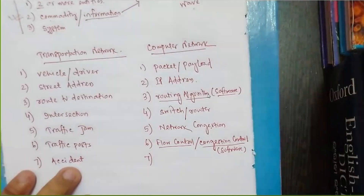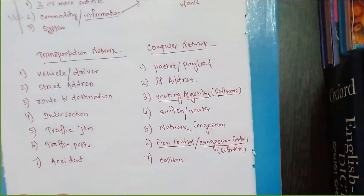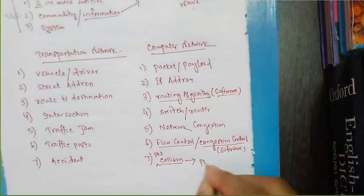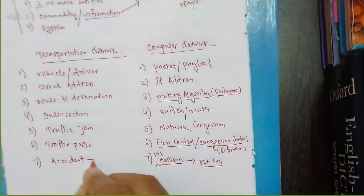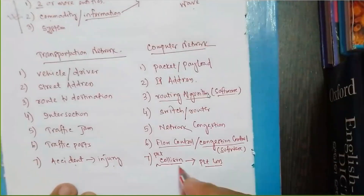If I say accident — the consequence of an accident is injury. Similarly, packet loss is the consequence of packet collision. Whenever we are sending a packet, one packet may collide with another due to congestion in the network. The result of packet collision is packet loss. Packet loss and packet collision are different — packet loss is the ultimate result of packet collision, just as injury is the result of an accident, but the two are not the same thing.